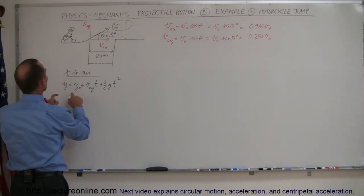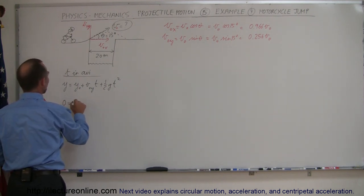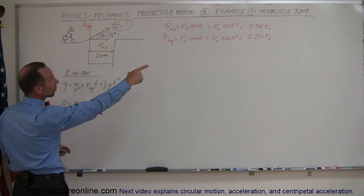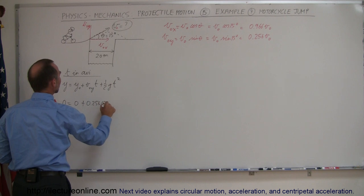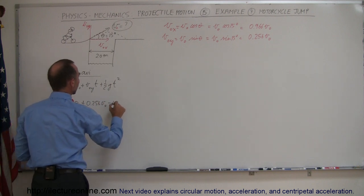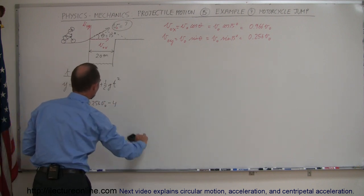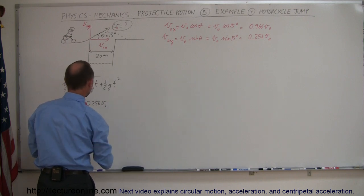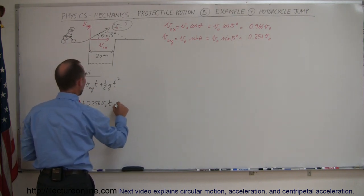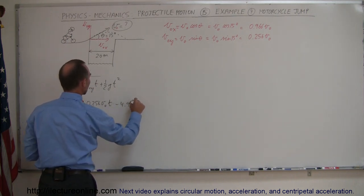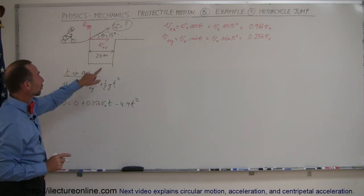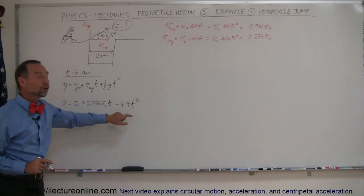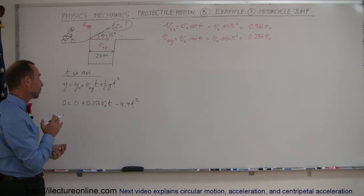Initial and final height would be the same so we could say 0 equals 0 plus initial velocity in the y direction that would be 0.256 v initial minus 4.9 t squared. Now notice again here we have the unknown v sub-naught which we're trying to find and we have the unknown time so we cannot solve for time with this equation.